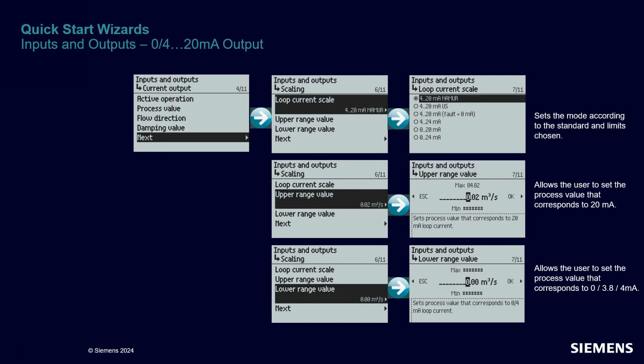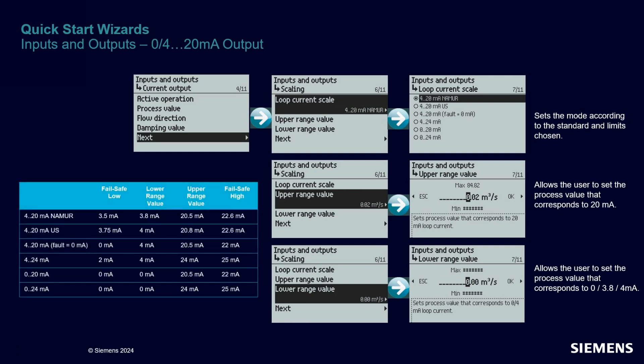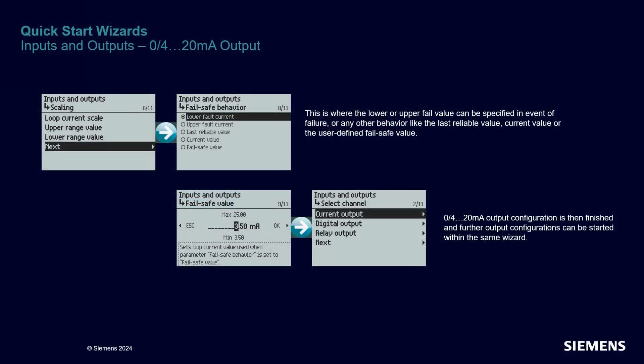Next, you must set the limits of your milliamp output. You can pick between multiple modes, which have different failsafe values and range values. It is up to you to select the ones that match your process controls. It is also at this stage that you configure the range values based on your process. The last configuration step is the failsafe behavior and its value. Now your milliamp output is configured and ready to go.